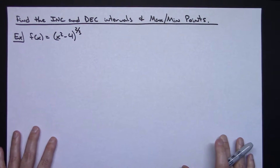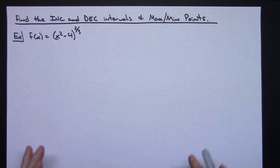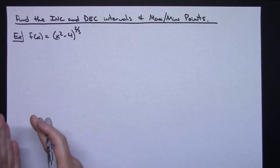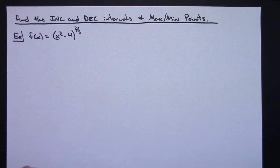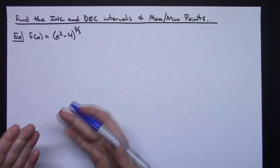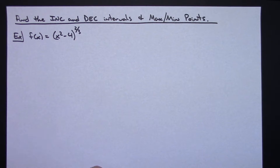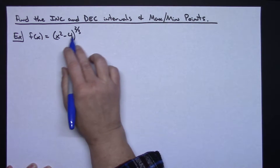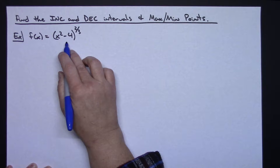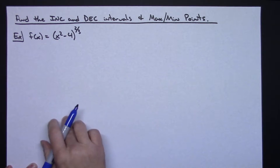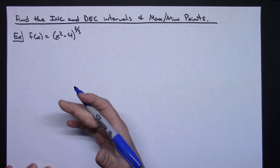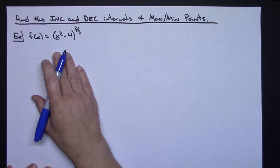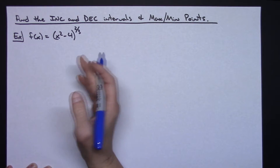Now let's put those two theorems into practice, working out a problem. Find the increasing and decreasing intervals and any maximum and minimum points on the function, assuming no calculator. So if my original function is (x² - 4) raised to the 2/3 power — basically a cube root function — cube root functions are smooth and continuous everywhere, so it's going to be differentiable everywhere. We are continuous on our closed interval and differentiable on the entire function as well.